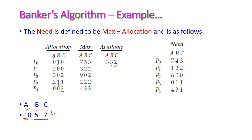Now with this information we have to compute the Need matrix. The formula is Need = Maximum minus Allocation. For P0: type A needs 7 - 0 = 7, type B needs 5 - 1 = 4, type C needs 3 - 0 = 3. So the need for P0 is [7, 4, 3]. Likewise we have to compute the need for all processes.